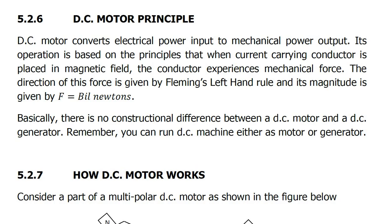The DC motor converts electrical power input to mechanical power output. Its operation is based on the principle that when a current-carrying conductor is placed in a magnetic field, the conductor experiences a mechanical force. The direction of this force is given by Fleming's left-hand rule, and its magnitude is given by F = BIL.